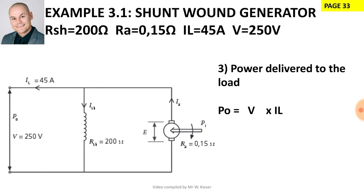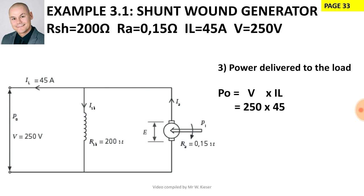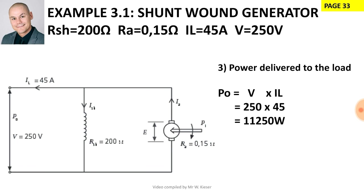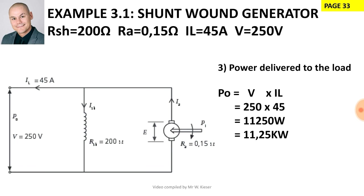Part 3 of the question: calculate the power delivered to the load. This is a DC circuit, so there is no power factor. The power formula is P = V × I, using the supply current. Terminal voltage is 250 V and supply current is 45 A, giving us 11.25 kilowatts.